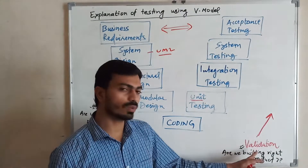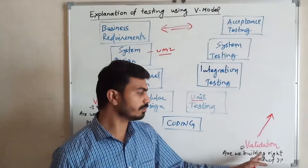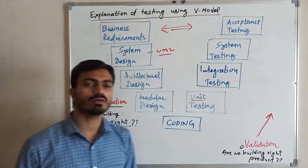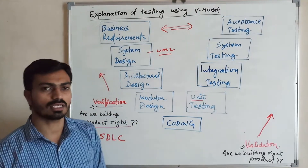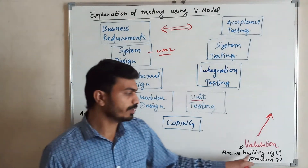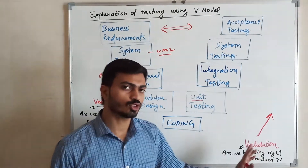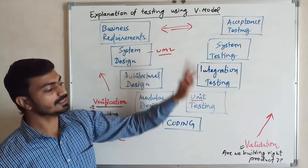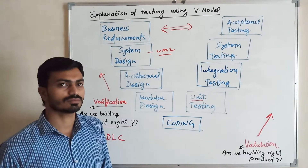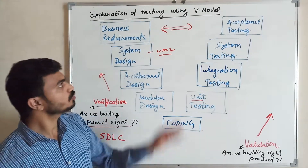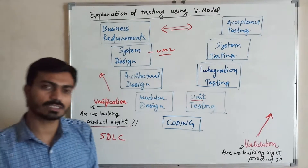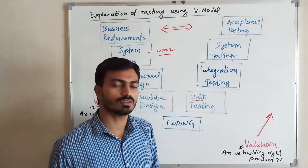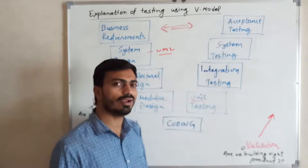The second phase is Validation. Validation means 'Are we building the right product?' — that is, the right product for customer requirements. If all business requirements are properly satisfied, then Validation is complete.